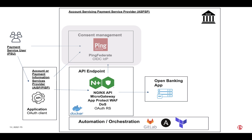NGINX App Protect WAF can precisely identify the difference between a valid and a malicious API call, as it can ingest the Open Banking OpenAPI spec file. NGINX App Protect DoS allows for a hands-off, machine-learning-driven configuration of signatures matching DoS attackers, resulting in very small overhead.